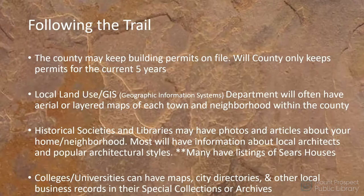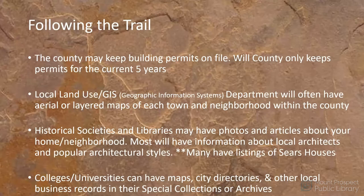Building permits can give you an idea of renovations or new structures that were built. The local land use department — the GIS geographic information system — builds digital maps with layers showing streets, water, school districts, and sometimes historic neighborhoods or designated landmarks. I always use Schaumburg Township as an example because they did an extraordinary job in their GIS department building a map overlay to show historic districts within the township.